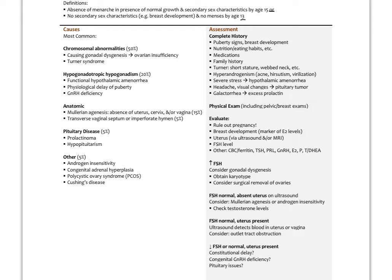The most common causes of primary amenorrhea include chromosomal abnormalities like Turner syndrome and gonadal dysgenesis; hypogonadotropic hypogonadism, also known as functional hypothalamic amenorrhea, which can result in GnRH deficiency; anatomic causes like Müllerian agenesis (absence of the uterus, cervix, and vagina), transverse vaginal septum, or imperforate hymen; pituitary diseases like prolactinoma or hypopituitarism; and other causes like androgen insensitivity, congenital adrenal hyperplasia, PCOS, and Cushing's syndrome.